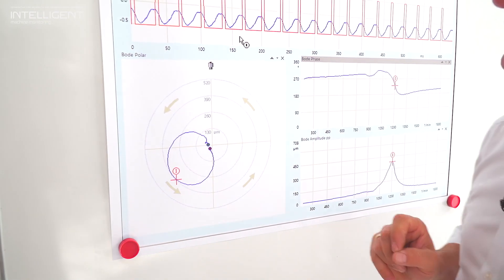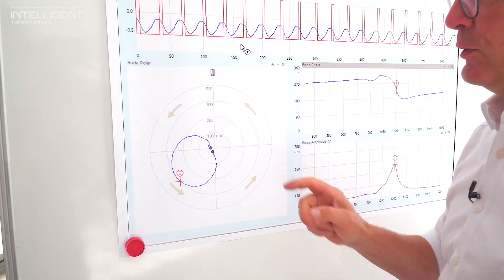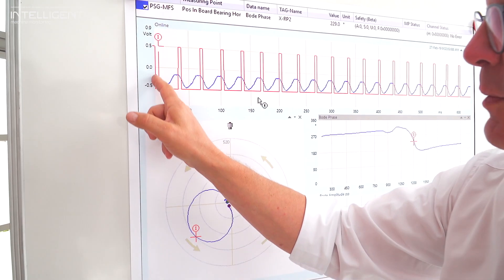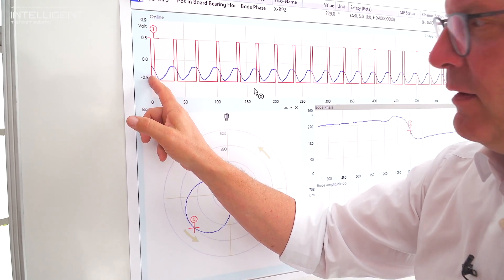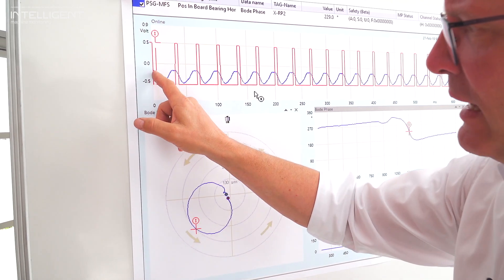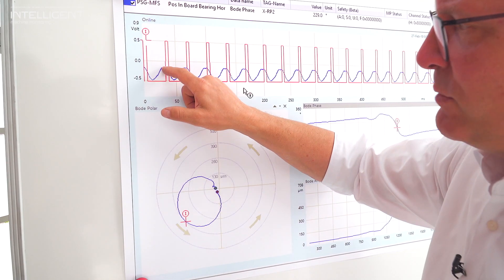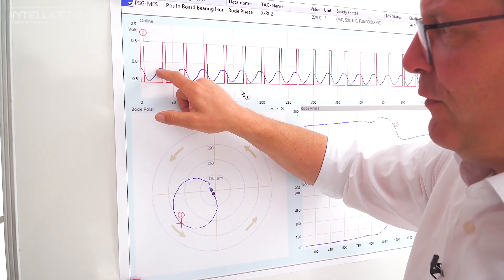What we also need is a key phaser to get the speed information. Here we see the information from the key phaser when the rotor passes the key phaser. Then we see from the starting point from the key phaser to the maximum amplitude, we see the phase.